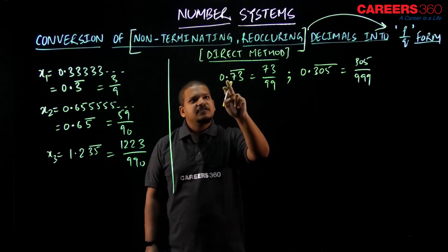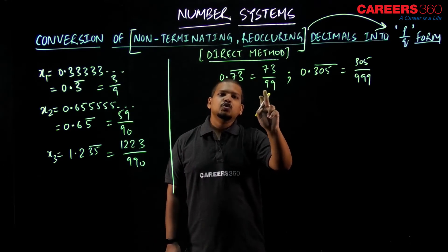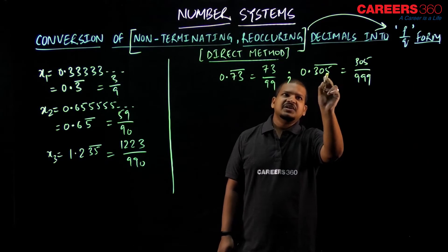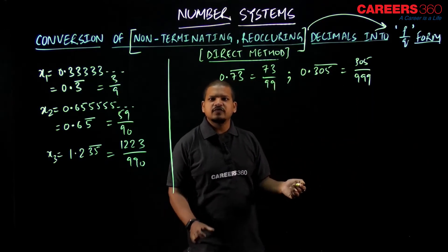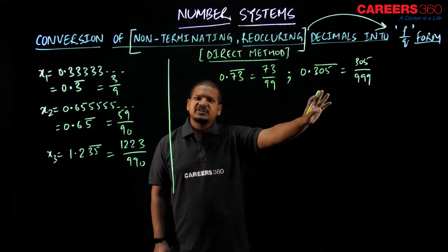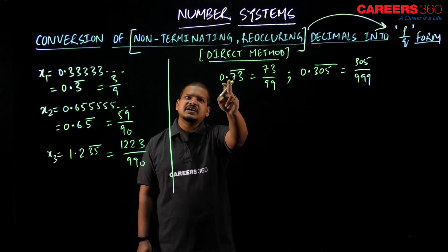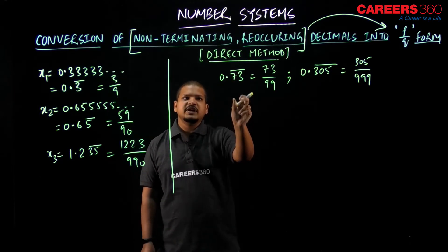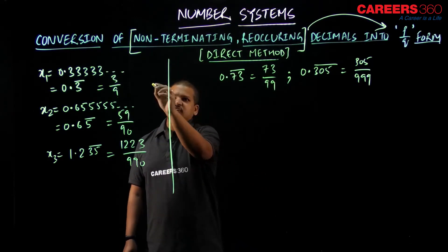After the decimal, if two digits are recurring, put two 9s in the denominator. If three digits are recurring, put three 9s. You can verify this using the standard calculation: let x = 0.73̄, then 100x = 73.73̄, and subtracting gives 73/99. So that was the first type — the first direct method.